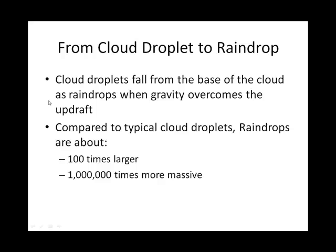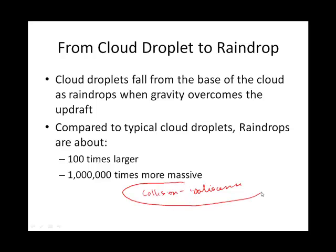Cloud droplets, when it's time for them to fall from the cloud, grow through the collision-coalescence process. During this process, the cloud droplets get larger and larger because they need to reach a certain mass in order to fall from the cloud as precipitation.